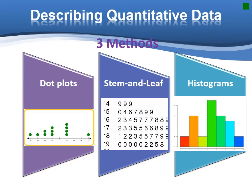To describe the quantitative data, we also have three methods: dot plot, stem and leaf display, and histogram plot.